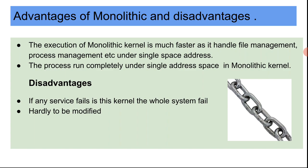There are also disadvantages: if any service fails in the kernel, the whole system fails because it is a single address space — when one thing fails, the system will crash. It is also hardly modifiable, meaning that because there is a single address space with many processes running and many operations being performed, modifying it may disturb other processes. That is why microkernel can be updated easily while the monolithic kernel is hard to update.